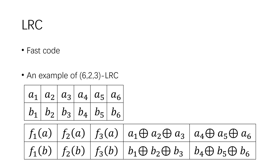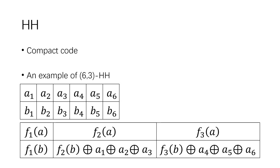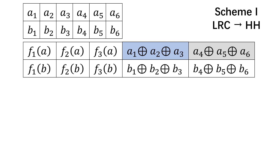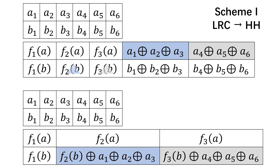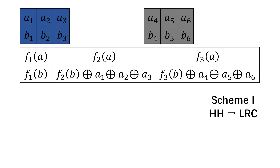LRC is the fast code in our scheme. Here is an example of a (6,2,3) LRC. Hitchhiker code is the compact code in our scheme. Here is an example of a (6,2,3) Hitchhiker code. We take advantage of this similarity to present our code switching algorithm. This animation shows how we switch LRC to Hitchhiker code, and another animation shows how we switch Hitchhiker code back to LRC.